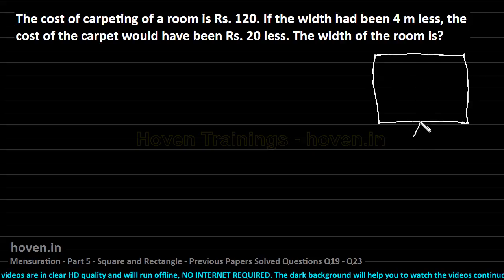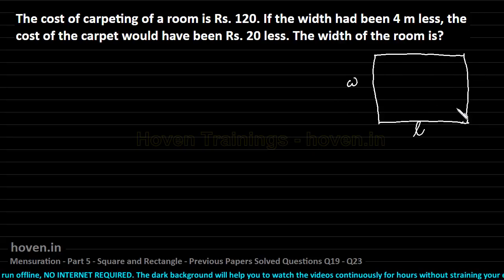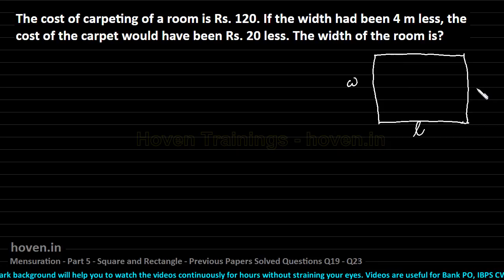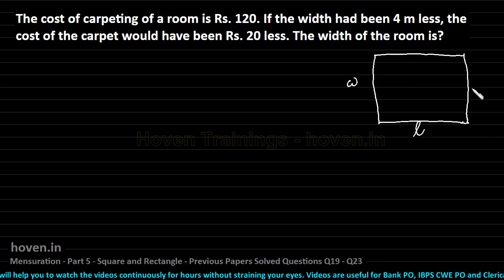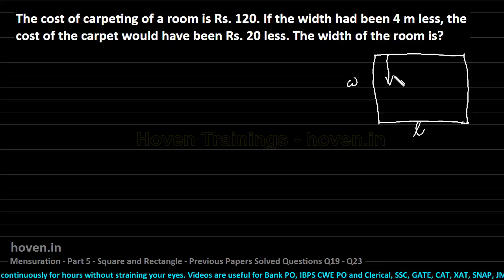Let this be the length of the room and let this be the width. When the whole room is carpeted, the cost is Rs 120. When only half the width had to be carpeted, the cost would have been half — meaning cost is entirely dependent on the width being covered.